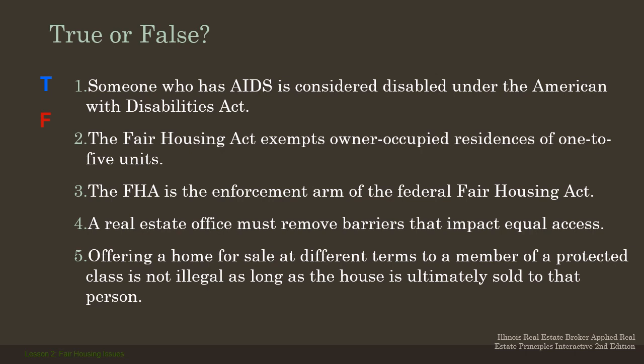The FHA is the enforcement arm of the federal Fair Housing Act — no, it's not the FHA; it's HUD, the Department of Housing and Urban Development. HUD enforces the federal Fair Housing Act. Who enforces the Illinois Human Rights Act? That's the Illinois Human Rights Commission. So HUD is the enforcement arm of the federal Fair Housing Acts. If you have a complaint, you take it to a HUD field office and file your complaint, or you can take it to the Illinois Human Rights Commission for a state violation.